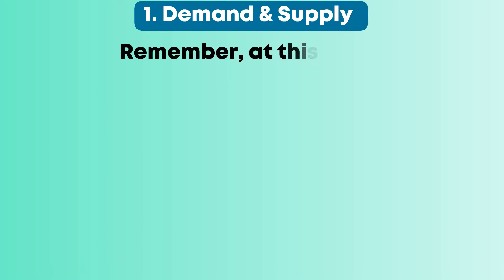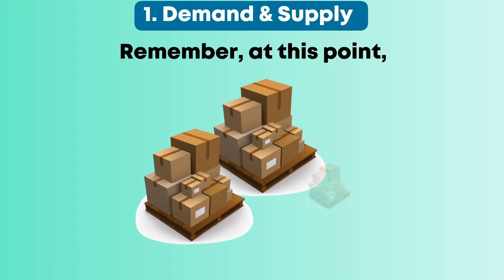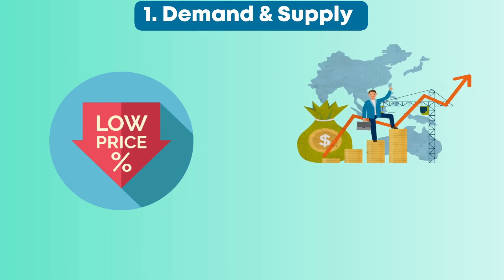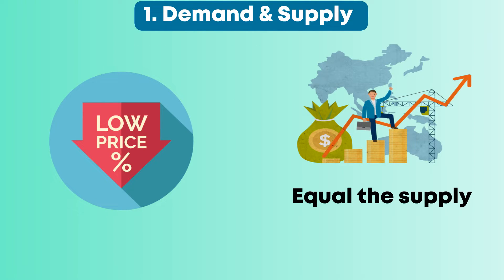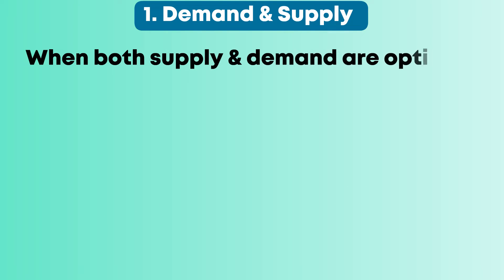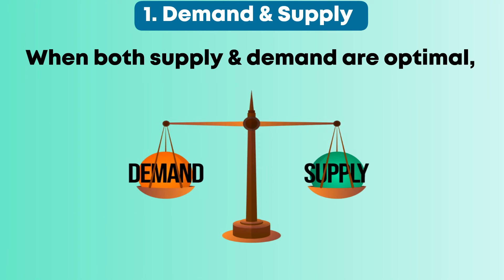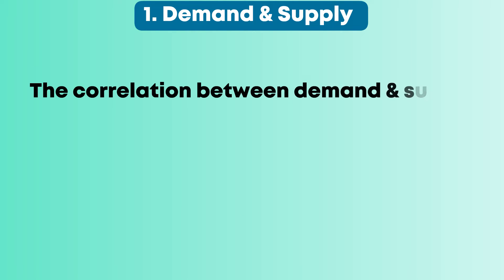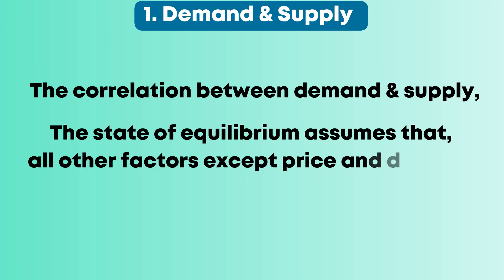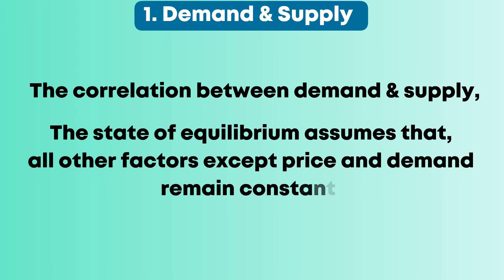Remember, at this point, manufacturers have a surplus of stock. So when prices go down, demand would pick up and equal the supply. Finally, when both supply and demand are optimal, a state of equilibrium is achieved. The correlation between demand and supply and the state of equilibrium assumes that all other factors except price and demand remain constant.